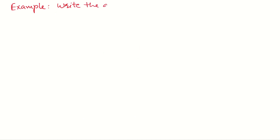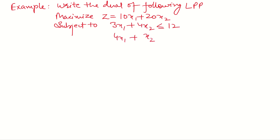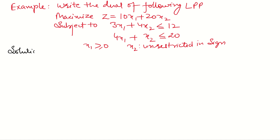Case 4: when some variables are unrestricted in sign, we divide the unrestricted variable into two variables. Write the dual of the following linear programming problem: Maximize z = 10x1 + 20x2, subject to 3x1 + 4x2 ≤ 12, 4x1 + x2 ≤ 20. Here x1 is positive but x2 is unrestricted in sign. So first, we divide x2 into two variables. Let x2 = x3 − x4, where x3 and x4 are both positive.